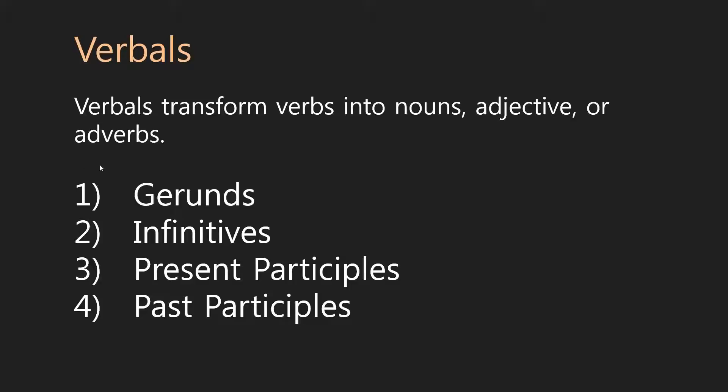So, to repeat, a verbal is when you transform a verb into a noun, an adjective, or an adverb. So, when a verb becomes not a verb. These are rather important because when we're analyzing sentence structure, verbs are really one of the keys to unlocking a lot of these sentences. So, you really need to know what is a verb and what is not a verb. And there are really four types of verbals.